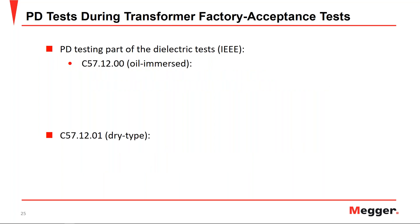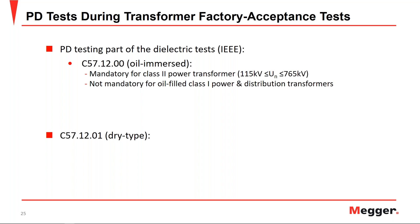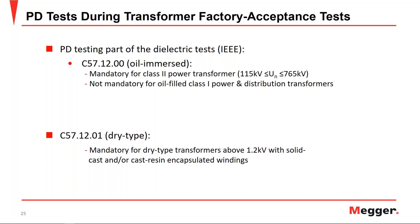The IEEE refers to nominal voltage rather than maximum voltage. Within the IEEE procedure, partial discharge testing is mandatory for class 2 power transformers with nominal voltages between 115 kV and 765 kV, translating to a maximum voltage range of 121 to 800 kV. Partial discharge testing is not required for oil-filled class 1 power transformers — defined as any transformer with a nominal voltage less than or equal to 69 kV — or for distribution transformers, usually rated between 5 and 500 kVA. For dry type transformers, PD testing is mandatory for any transformer above 1.2 kV with cast resin or solid cast encapsulated windings.